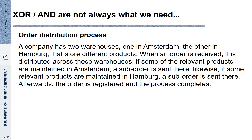There are situations where XOR and AND gateways are not enough. Let us have a look at an order distribution process. A company has two warehouses, one in Amsterdam and the other in Hamburg, that store different products. When an order is received, it is distributed across these warehouses. If some of the relevant products are maintained in Amsterdam, a suborder is sent there. Likewise, if some relevant products are maintained in Hamburg, a suborder is sent there. Afterwards the order is registered and the process completes.